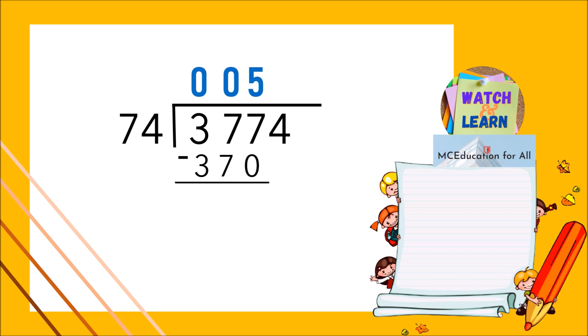377 minus 370 is equal to 7. Bring down 4. 74 divided by 74 is 1. 1 times 74 is 74. And 74 minus 74 is 0. Therefore, the answer is 51.